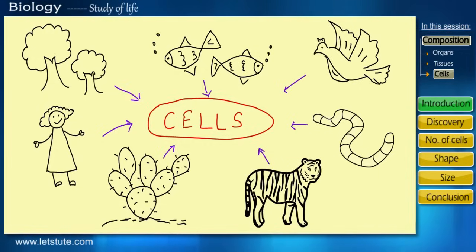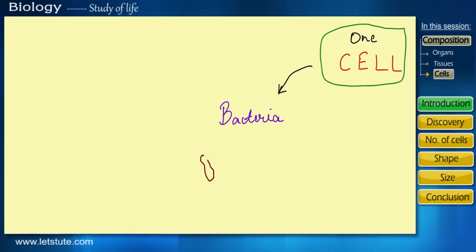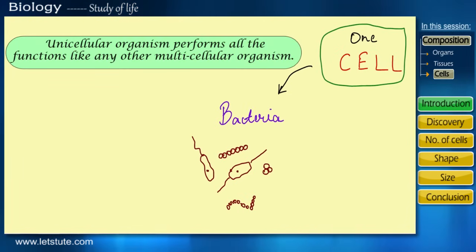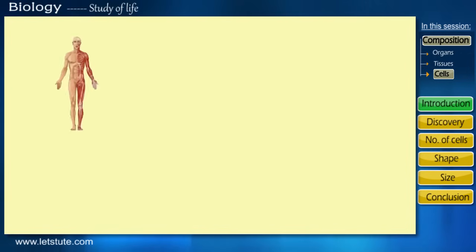But besides this, some organisms like bacteria are made up of only one cell. A one-celled organism is altogether an individual itself which can perform all the functions like any other multicellular organism. So as we all know, every organism performs various functions during its entire lifespan, like respiration, digestion, excretion, reproduction, etc.